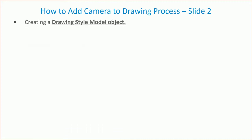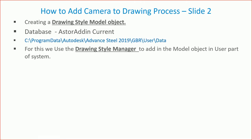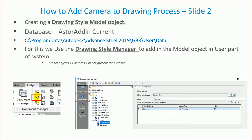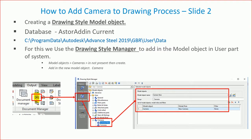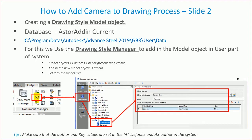Next, we need to create a model object in the drawing style manager to link the new camera type to the drawing system and the process system. You might find this structure is partially in place in some systems. Fundamentally, you're creating something that links the model role to the model object, which is used inside the drawing style system to link to the drawing process system. Make sure your management tool defaults and author are set up because it will create line entries in the database. It's better to do this through the drawing style manager itself.